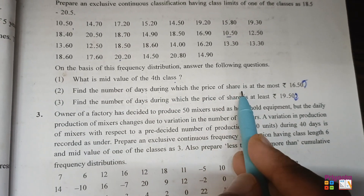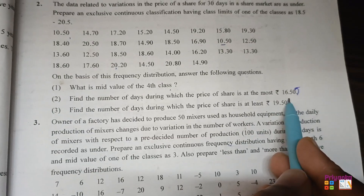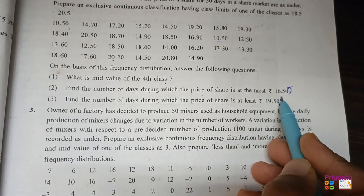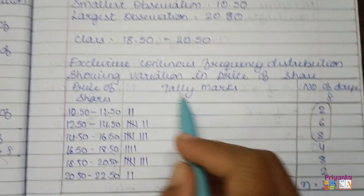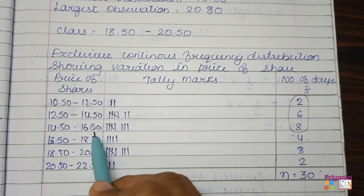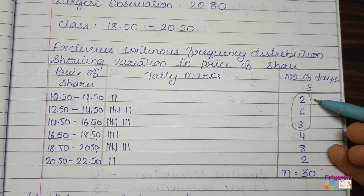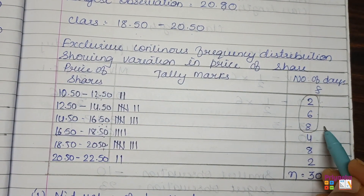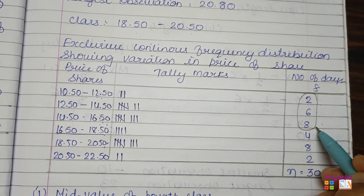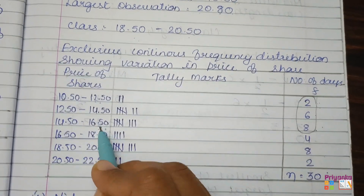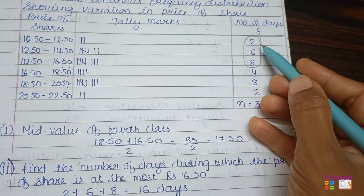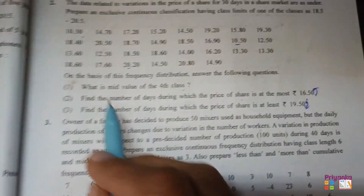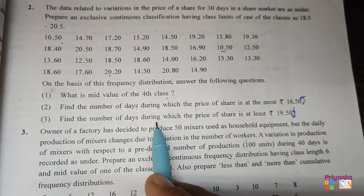The next sub-question asks to find the number of days during which the price of a share is at most 16.50. At most 16.50 means we count all classes up to and including 16.50. From the frequency table, the relevant frequencies are 2, 6, and 8. So the total number of days is 2 plus 6 plus 8, which equals 16 days.